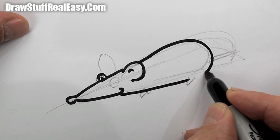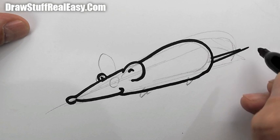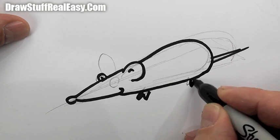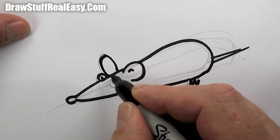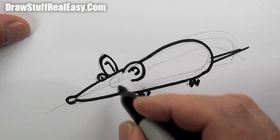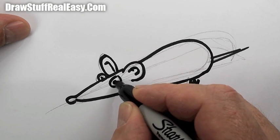...can go around like that. Tail, feet, the other ear on the other side, there's an eye on this side.